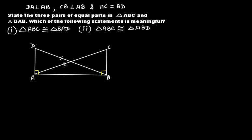In this problem, DA is perpendicular to AB and CB is perpendicular to AB — meaning both are at right angles to AB — and AC equals BD. The first part of the question asks us to state the three pairs of equal parts in triangle ABC and triangle DAB. Let's highlight triangle ABC, since the two triangles share a common side AB.